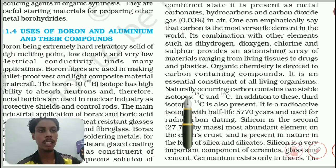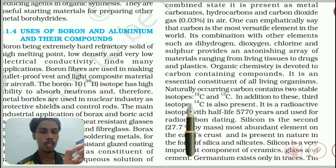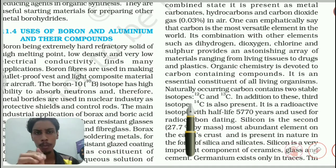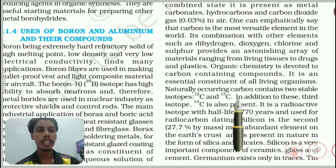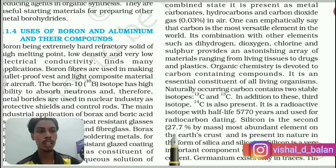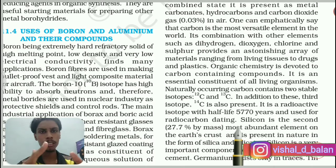Naturally occurring carbon contains two stable isotopes: C-12 and C-13. In addition, a third isotope, C-14, is also present. C-14 is a radioactive isotope with a half-life of 5770 years and is used for radiocarbon dating. Half-life is already explained in the first part of this chapter.